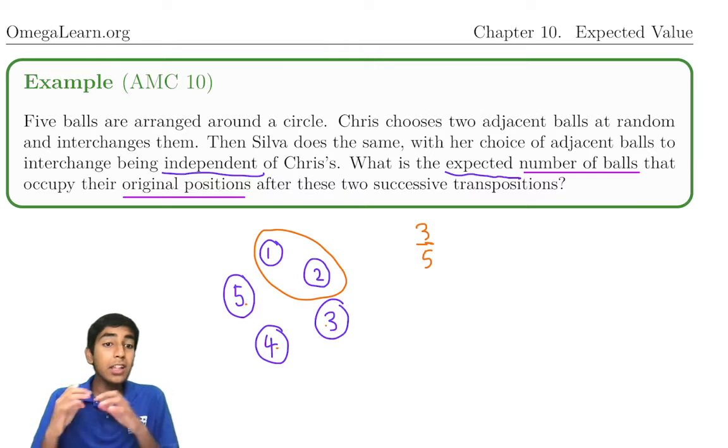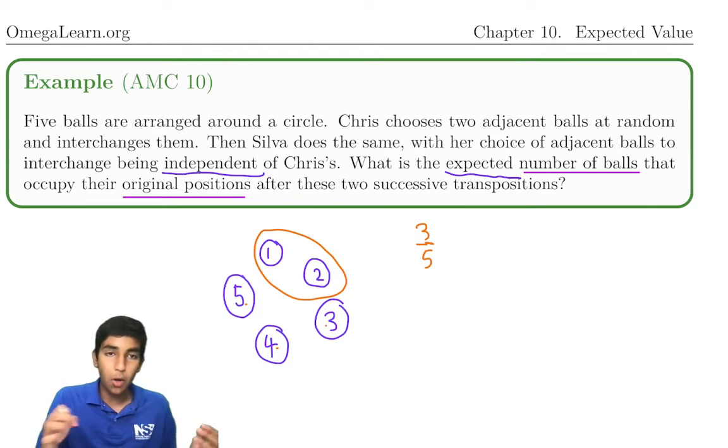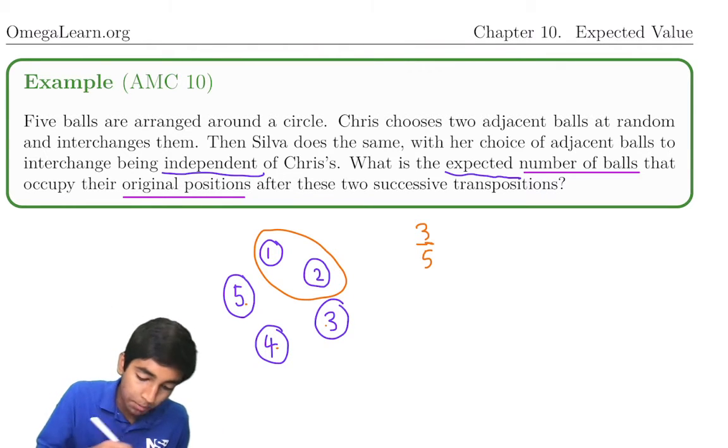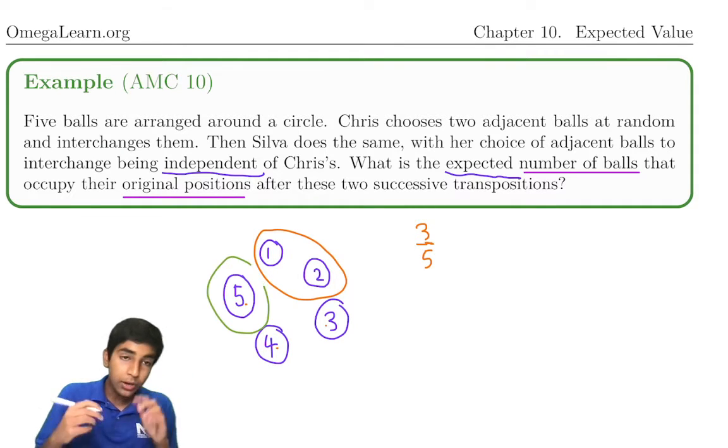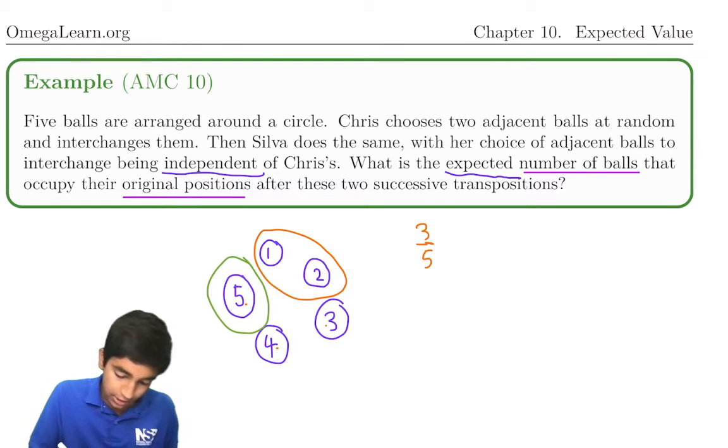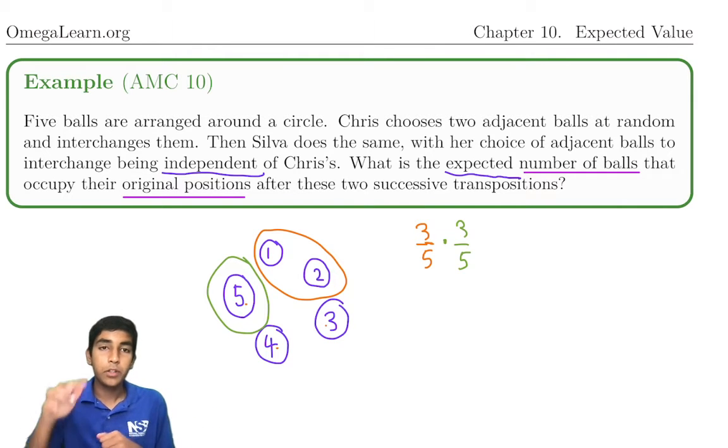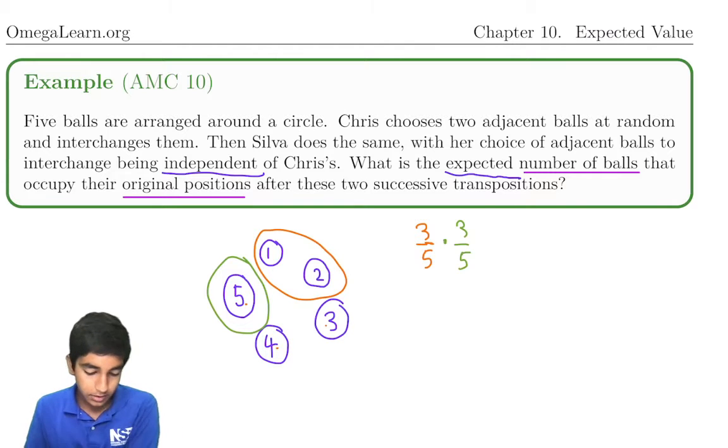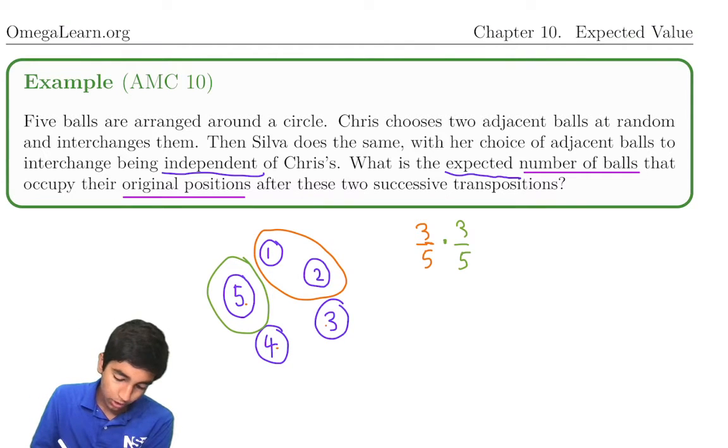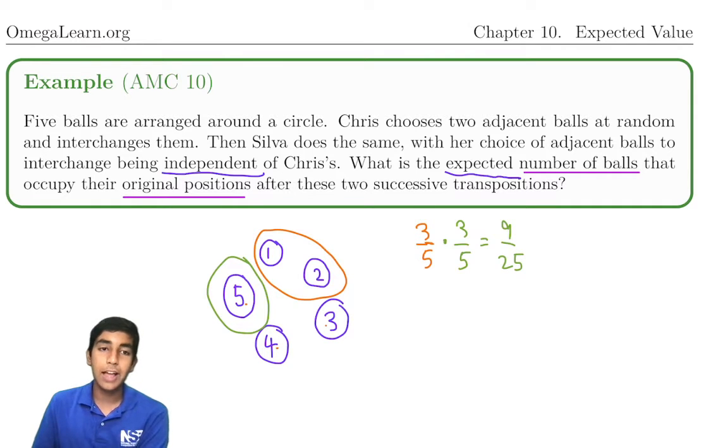So what's the probability that Silva also doesn't pick up a specific ball? Right now we're talking about just one ball, not all of them. Just five, let's say. So there's a three-fifths chance five won't get flipped by Chris, and there's a three-fifths chance it won't get flipped by Silva. Because they all have equal probability, three-fifths. Two-fifths of the ball swapped, three-fifths not. There is a 9 over 25 chance that the ball does not get moved at all.